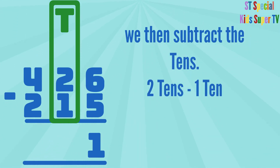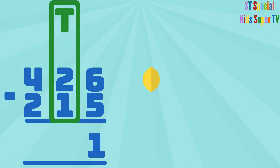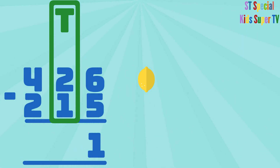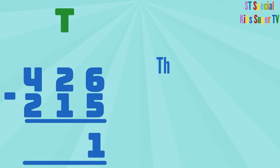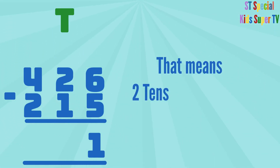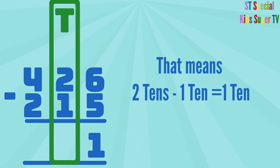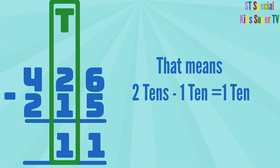We then subtract the tens: 2 tens minus 1 ten. 2 lemons minus 1 lemon equals 1 lemon. That means 2 tens minus 1 ten equals 1 ten. So you write the 1 under the tens column.